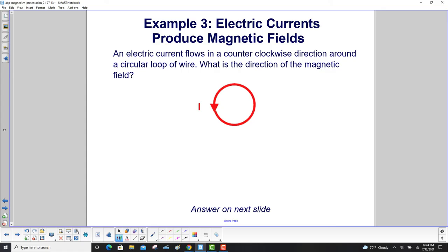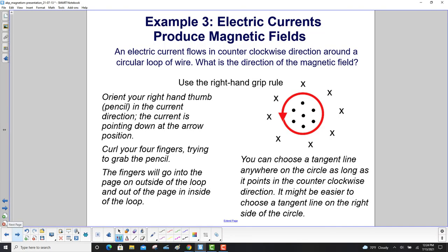An electric current flows in a counterclockwise direction around a circular loop of wire. What is the direction of the magnetic field? Orient your right-hand thumb or pencil in the current direction. The current is pointing down at this arrow position. Curl your four fingers trying to grab the pencil. The fingers will go into the page on the outside of the loop, which is why you have the X's out here, and then you keep curling it and you'll find that it's going out of the page inside the loop. You can choose a tangent line anywhere on the circle, as long as it points in the counterclockwise direction. It actually might be easier to choose a tangent line over here when you try and curl your fingers.